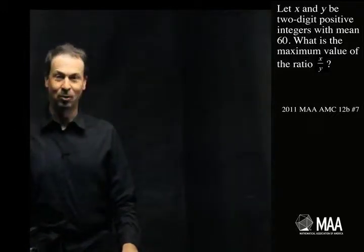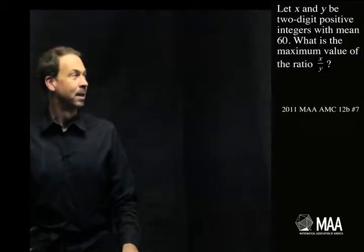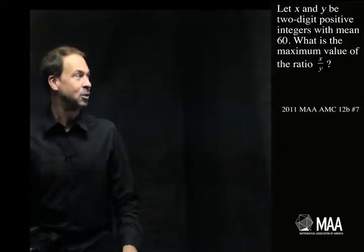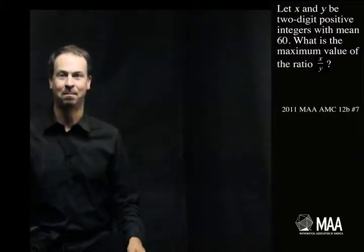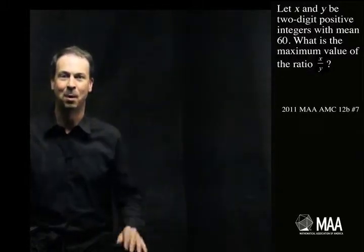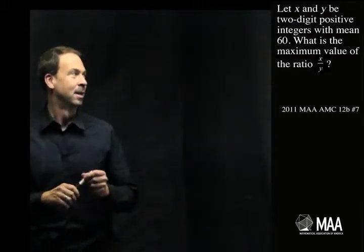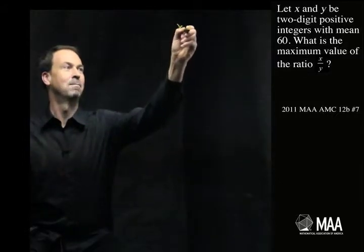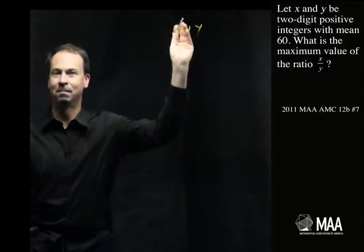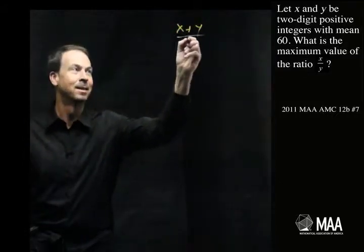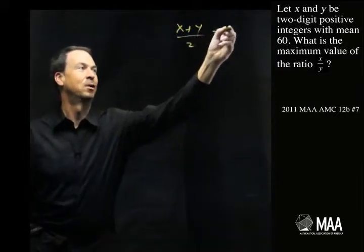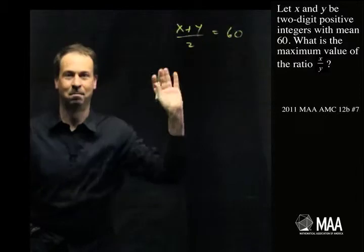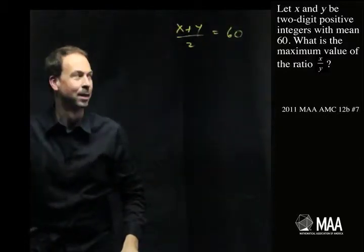So here goes. Let's read the two sentences again. Let x and y be two two-digit positive integers with mean 60. Sentence number one doesn't feel scary — I can handle that. I've got two numbers, x and y, where the mean is 60. I know what that means: the average value is 60. Sentence one, fine.